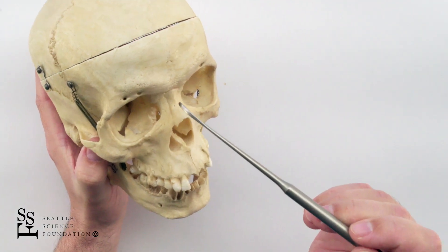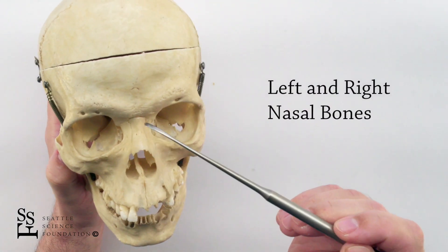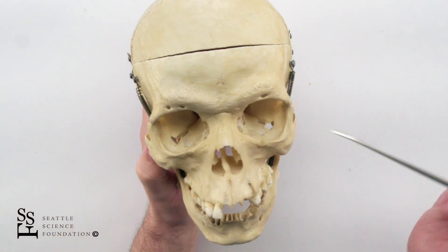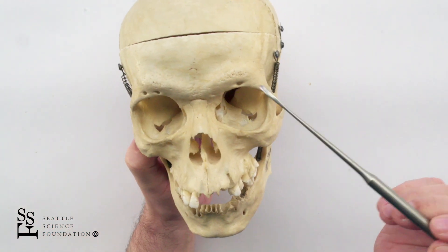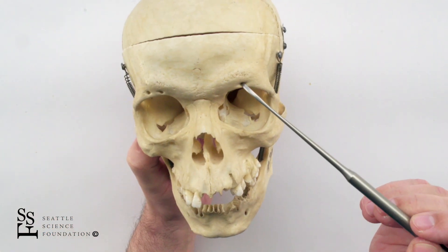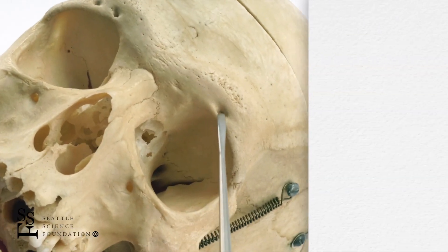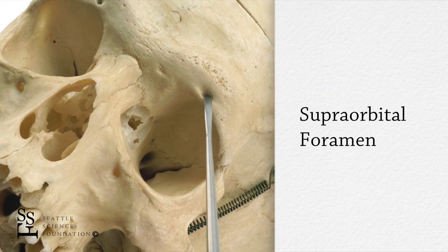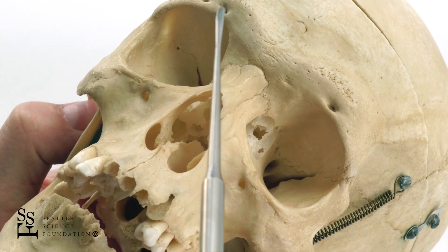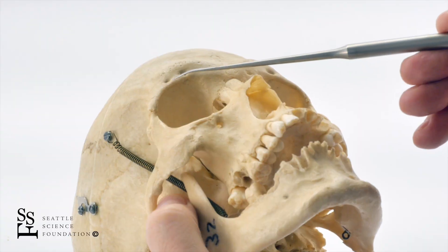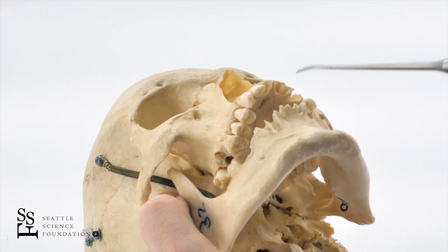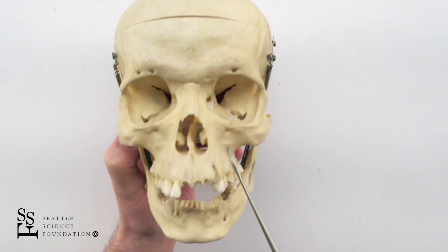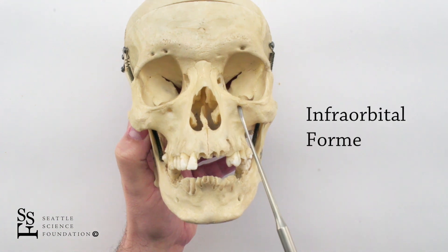These are the left and right nasal bones. Of the frontal bone, we see a large opening here — this is the supraorbital foramen, duplicated on this side. On the maxillary bone, we see the infraorbital foramen.